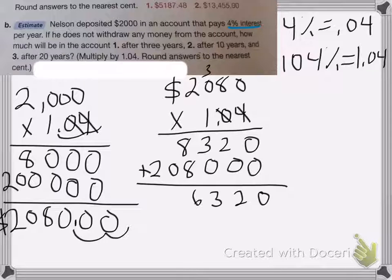Add those together. 3, 16, 2. And the decimal place is in. So the second year, he gets a total of $2,163.20.